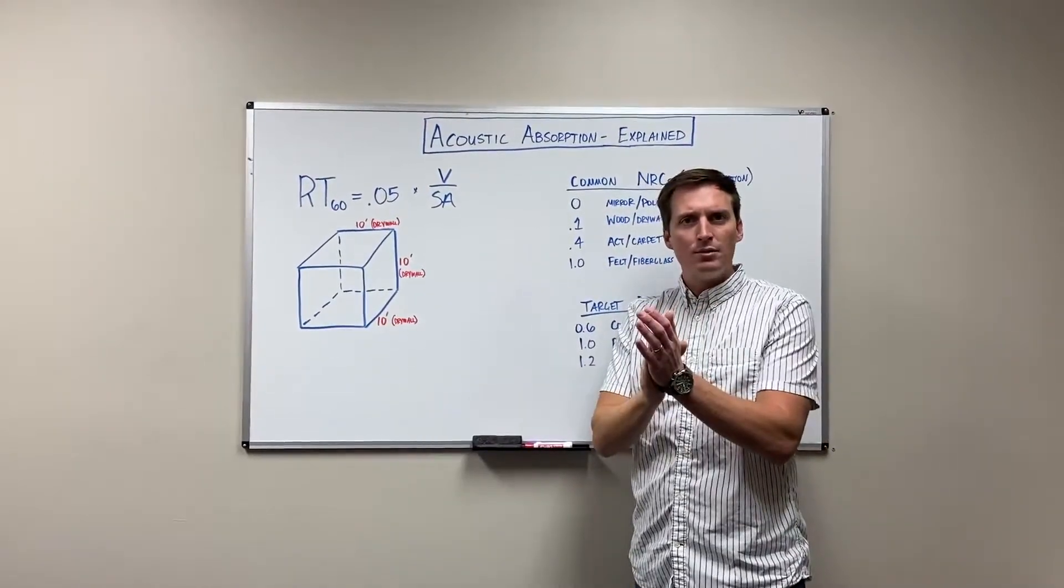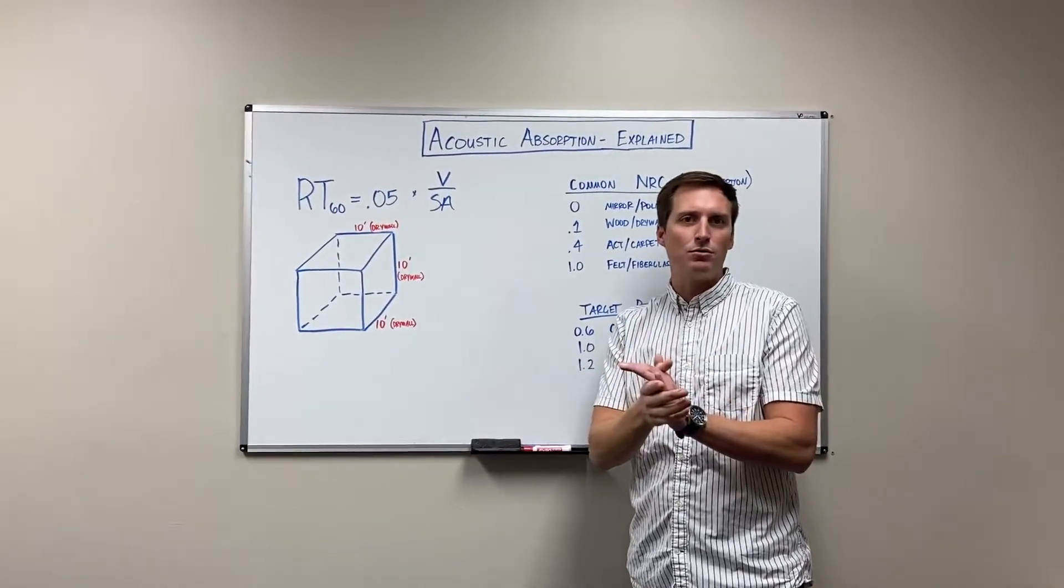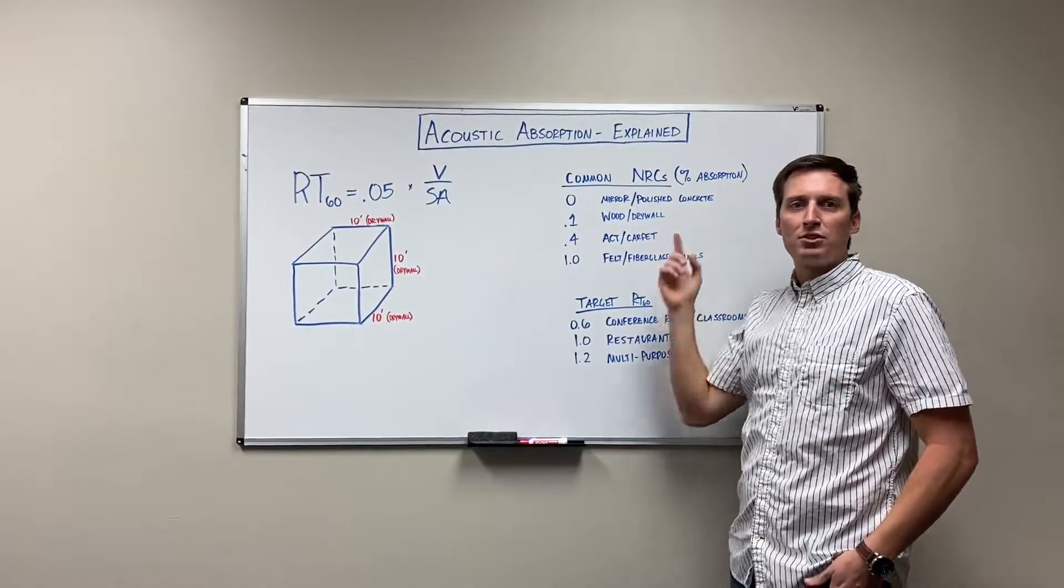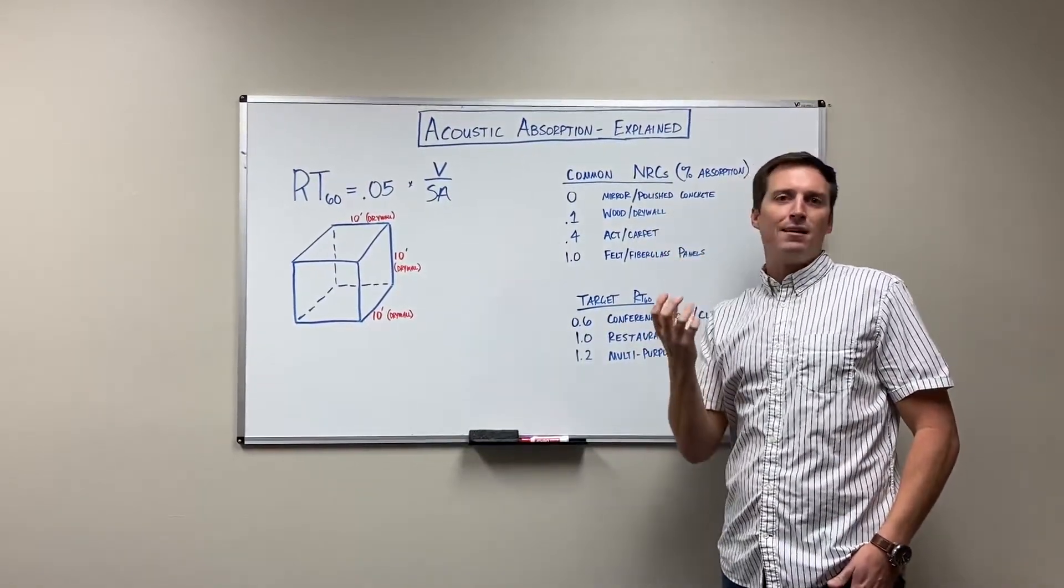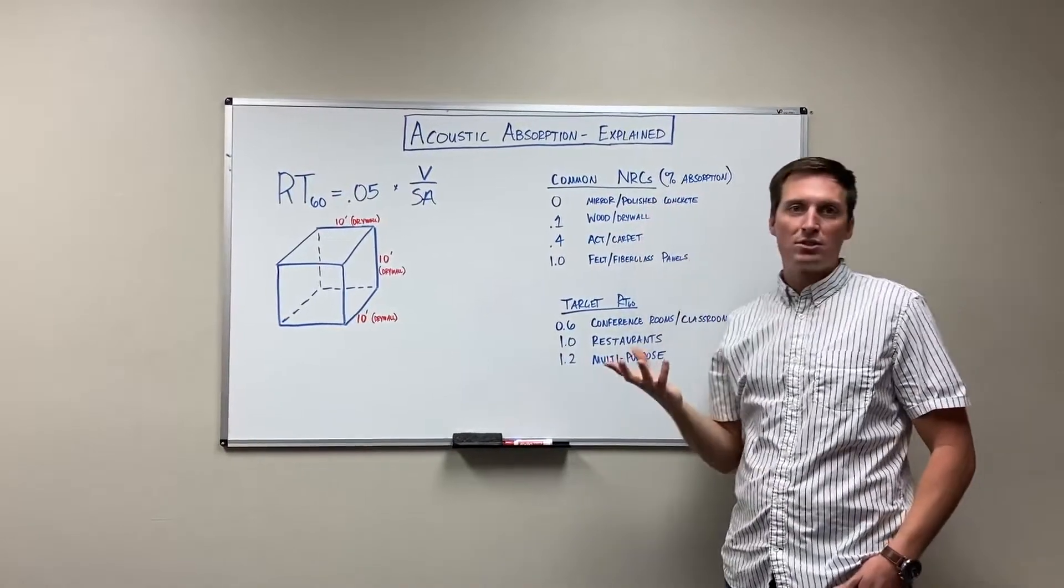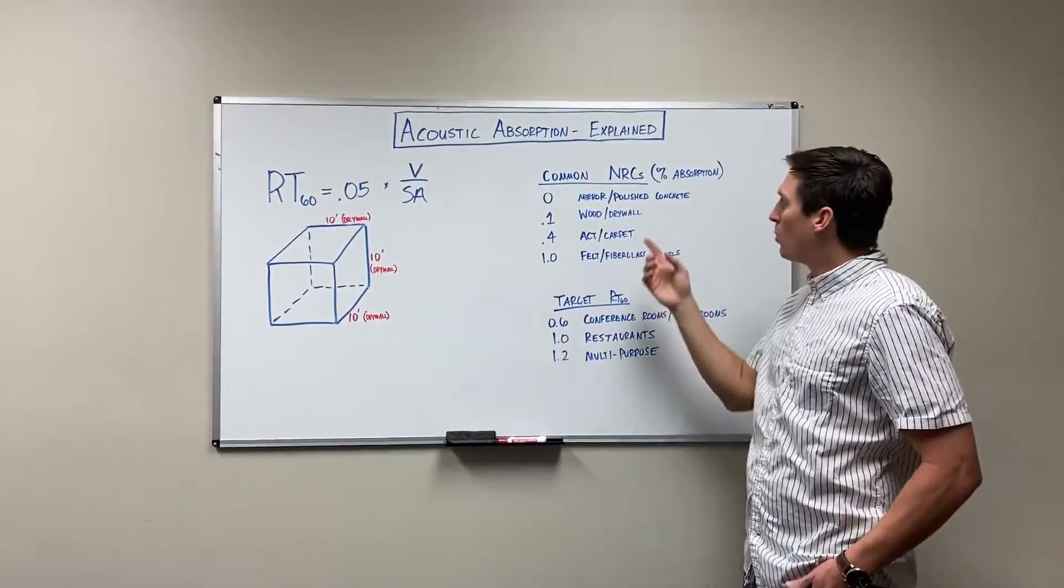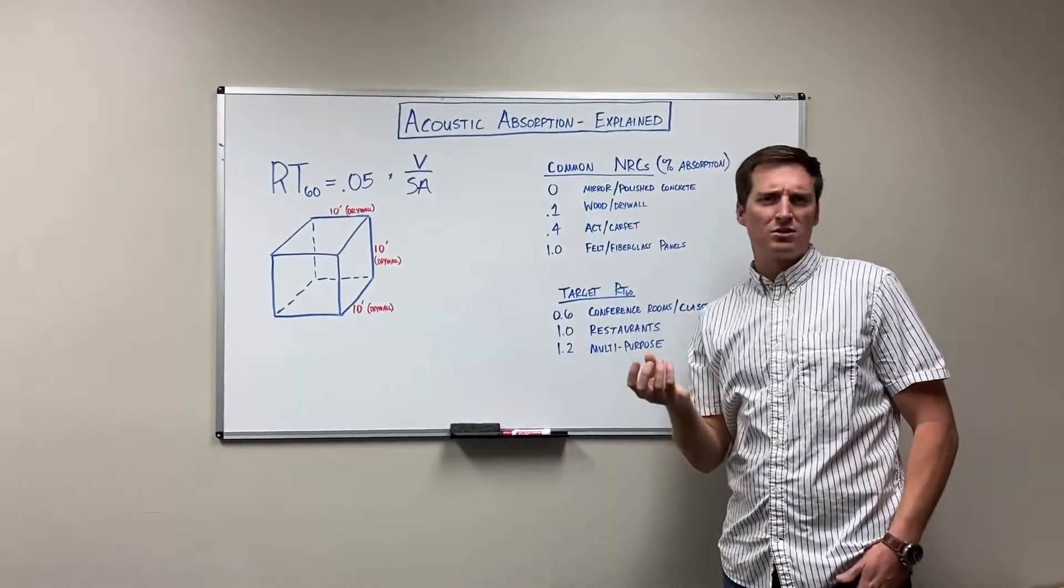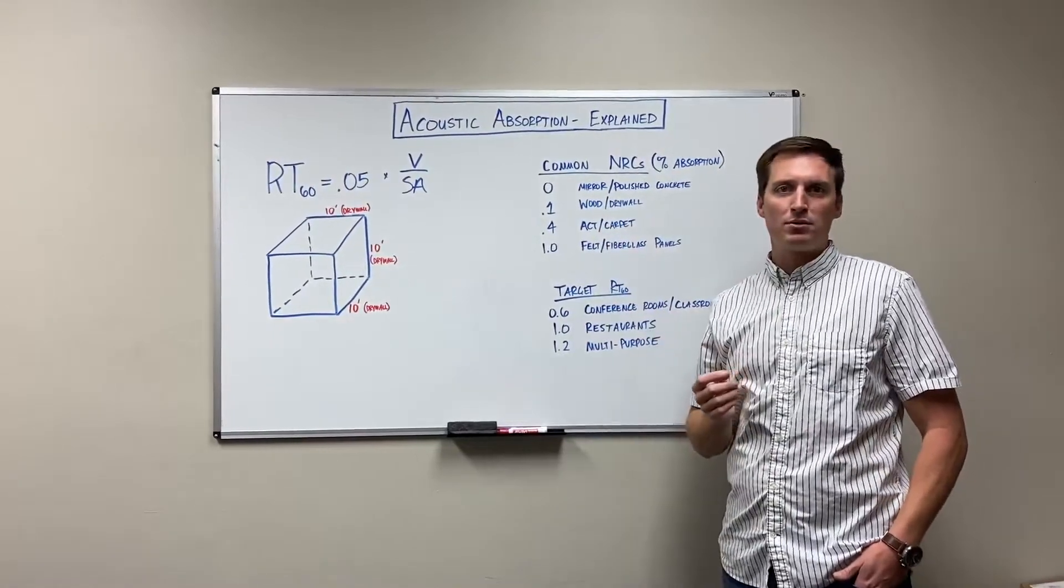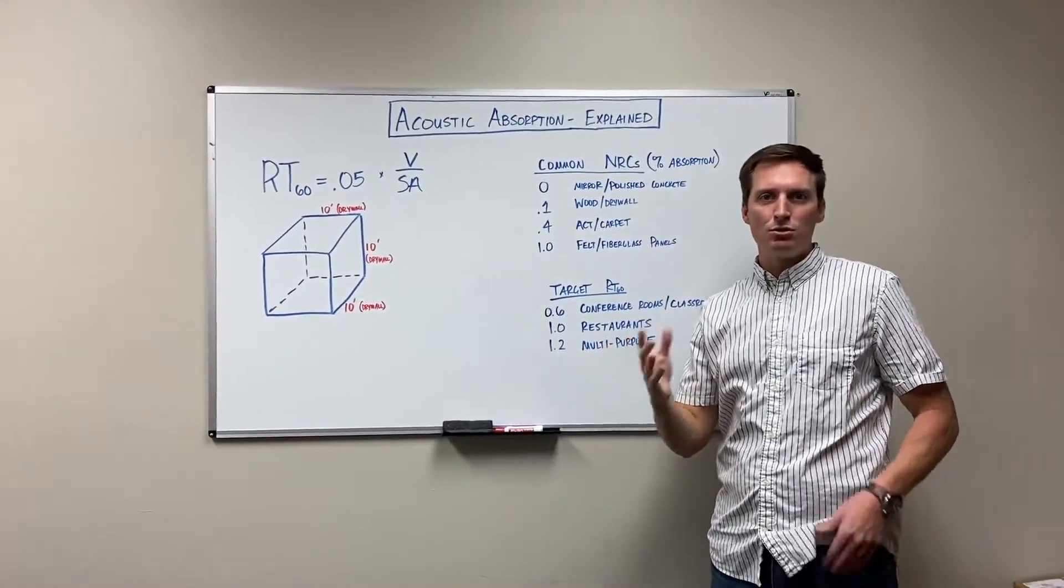That's how long it takes for an impulse noise like a clap to go back down to ambient levels. And our NRC is noise reduction coefficient - that's how much sound each surface absorbs. So a mirror or polished concrete, that's gonna absorb 0% of the sound that hits it, it's gonna reflect 100%. Whereas wood or drywall absorb just a little bit, about 10%. ACT and carpet might be 40%, and acoustic panels, fiberglass panels, felt panels, those will absorb about 100% of the sound that hits them.